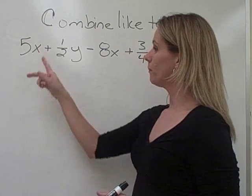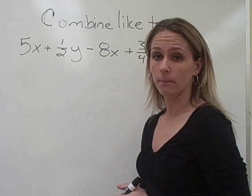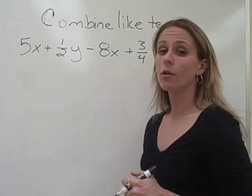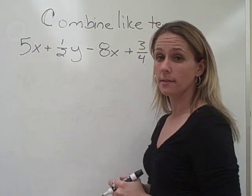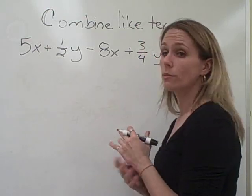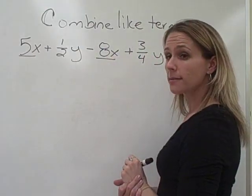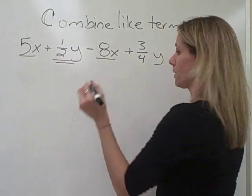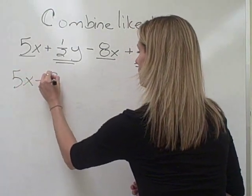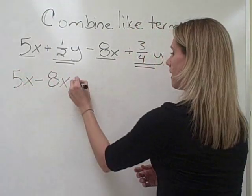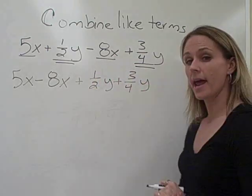Our next example is 5x plus 1 half y minus 8x plus 3 fourths y. So again, we ask, are there like terms here? Are there things we can combine? In this case, the answer to our question is yes. But we can only put like terms together. So we see that the 5x is a like term with the minus 8x. And the 1 half y is a like term with 3 fourths y. So I'm going to put the 5x next to the minus 8x. And I'm going to add 1 half y to the 3 fourths y. And I get this.